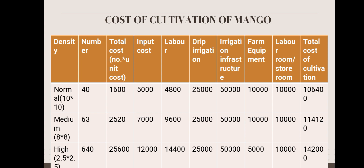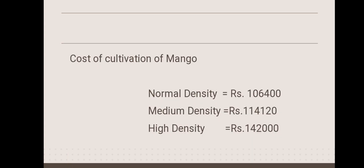For high density plantation, number of plants is 640. Various cost components including irrigation infrastructure, farm equipment, and labor cost are considered, giving a total cost of one lakh forty-two thousand. To summarize, cost of cultivation based on density: normal density is rupees one lakh six thousand four hundred, medium density one lakh fourteen thousand one hundred twenty, high density one lakh forty-two thousand.